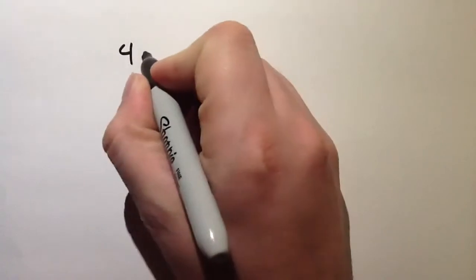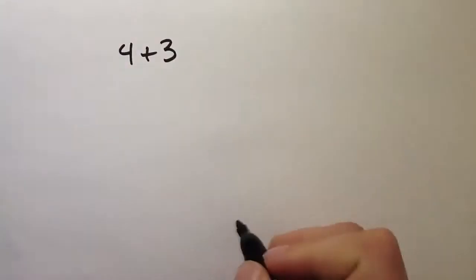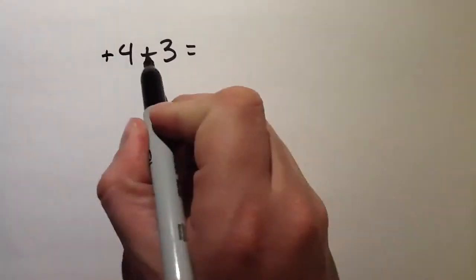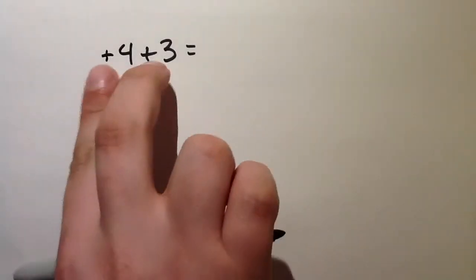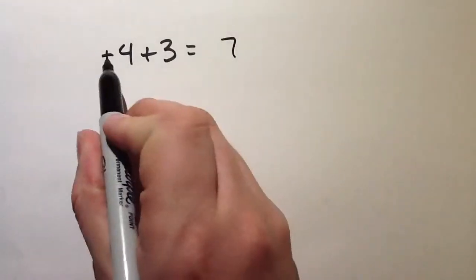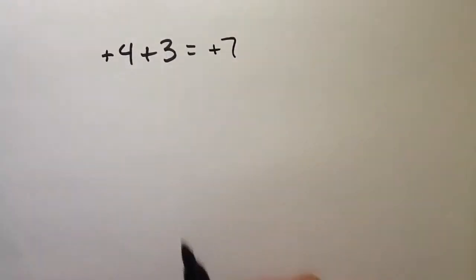I'm going to start off with the basic one, 4 plus 3. If we can see here, this is a positive 4 plus 3. Since both are positive, I add the two numbers, 7, and then I write the sign, so that equals a positive 7.